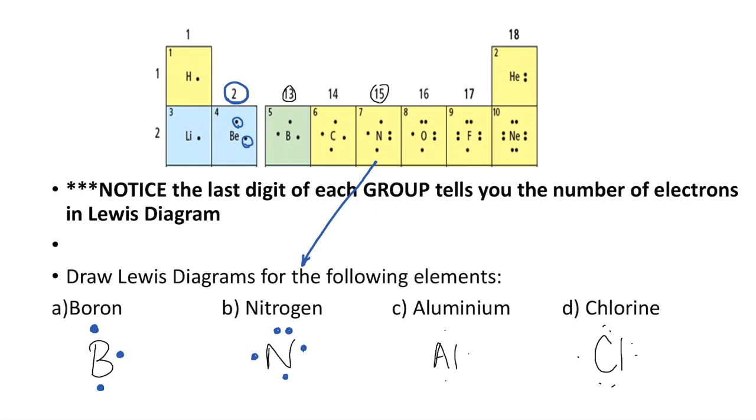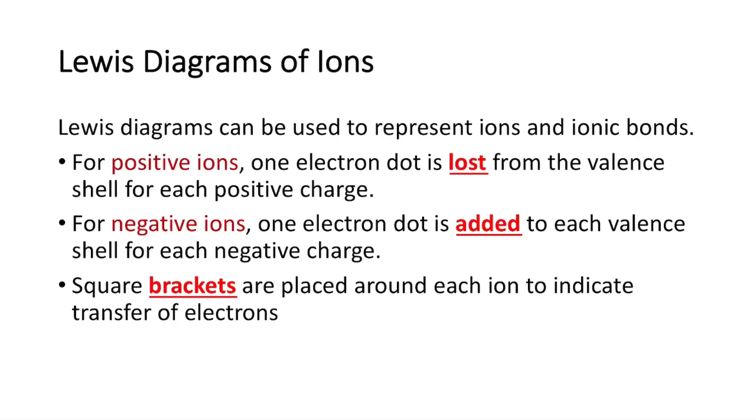I would like you to try the other two as I'm working through them here. Aluminum on the periodic table is in group 13, so the last digit is a three. So one, two, three. And chlorine is in group 17, so it has seven valence electrons. We're going to do one, two, three, four, pair up, five, six, and seven. Make sure you have those correct. Pause if you need to, go back and re-watch this if you need.